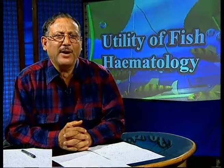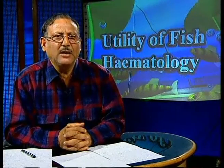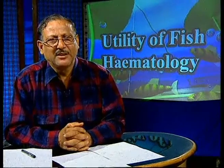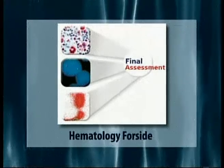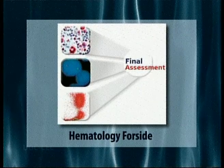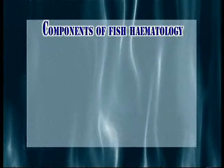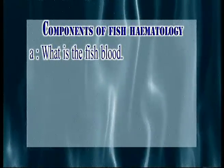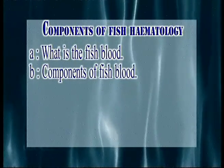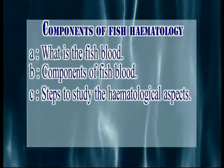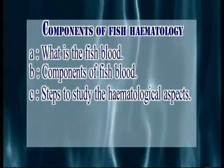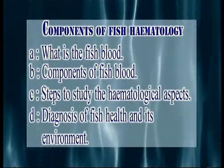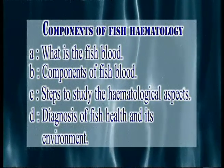For diagnosis, we require hardly one or two drops to not more than one ml of blood to diagnose either the fish's health or its ambient environmental conditions. Under this talk, we will discuss: first, what fish blood is; second, the components of fish blood; third, the various steps to study hematological aspects; and fourth, how to diagnose fish health and assess its environment using various parameters.